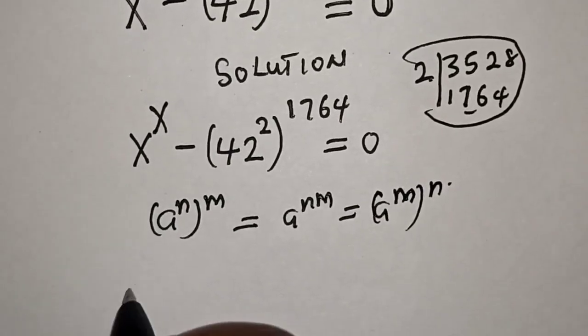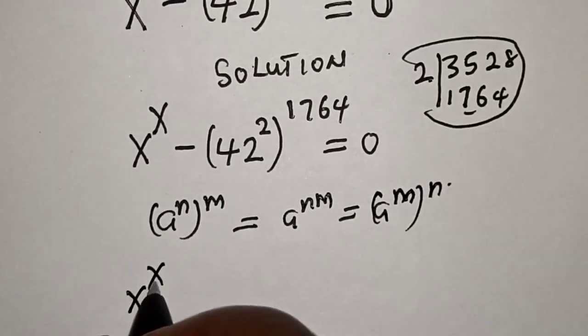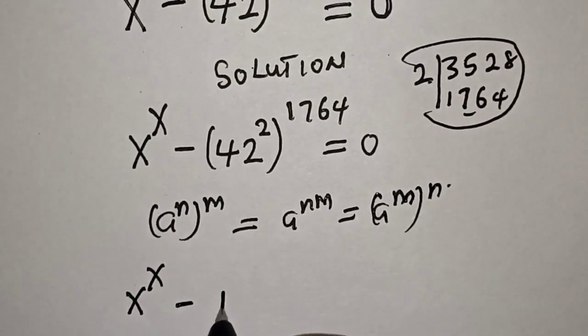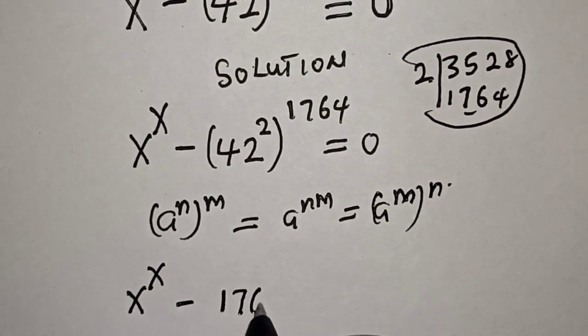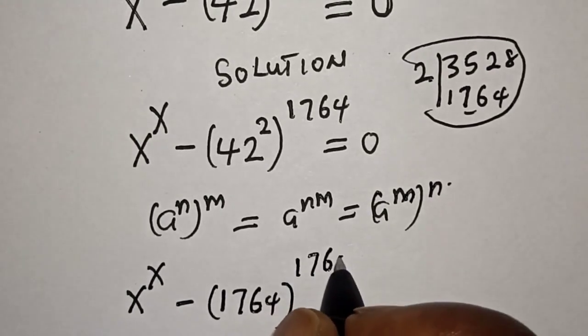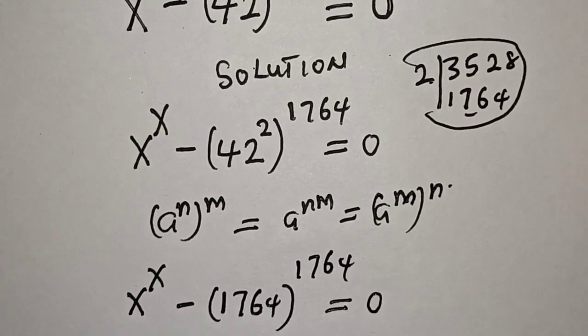Then we have x raised to power x minus 42 squared, that is 1764, raised to power 1764 is equal to 0.